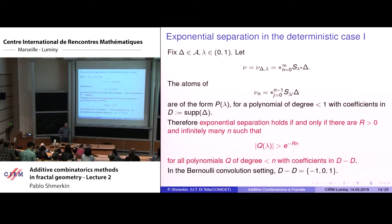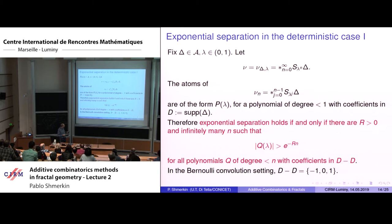I want non-zero polynomials to be bounded away from zero in an exponential sense. In the Bernoulli convolution case, D is {-1, 1}, so exponential separation means that lambda is not very well approximated by roots of a {-1, 0, 1} polynomial. It is a very difficult problem to understand when exponential separation holds in the Bernoulli convolution case. It is a conjecture — apparently completely out of reach — that it holds for every transcendental number lambda.